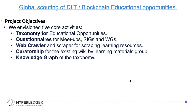The objectives of this project were five core activities. First was a taxonomy for educational opportunities — a list of educational opportunities. Second, we would have questionnaires for meetups, special interest groups, and working groups. Third, a web crawler to help scrape and crawl websites considered learning resources. Fourth, curatorship, meaning people should be able to add and interact with the database. And fifth, a knowledge graph of the taxonomy.